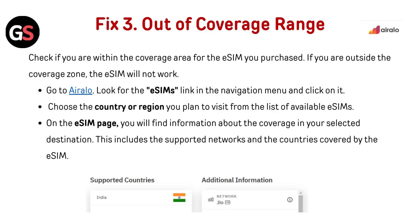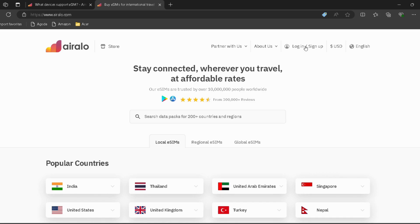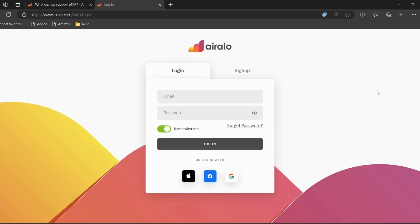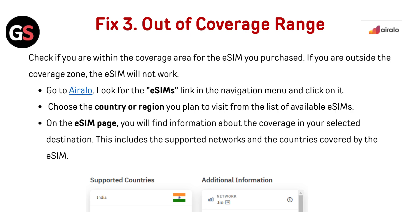Out of coverage range — check if you are within the coverage area for the eSIM you purchased. If you are outside the coverage zone, the eSIM will not work. Go to AirLo (link in the description). Look for the eSIM link in the navigation menu and click on it. Choose the country or region you plan to visit. On the eSIM page, you will find information about coverage, supported networks, and countries covered by the eSIM.